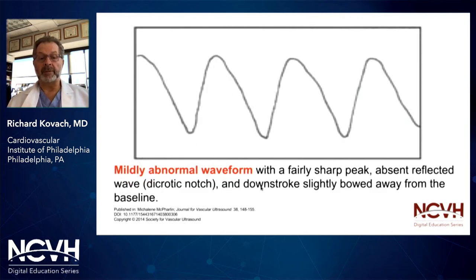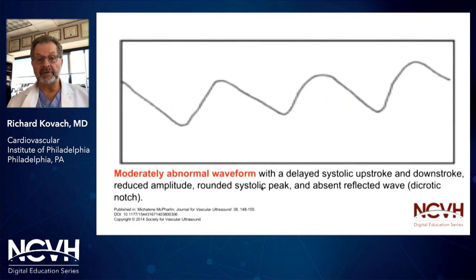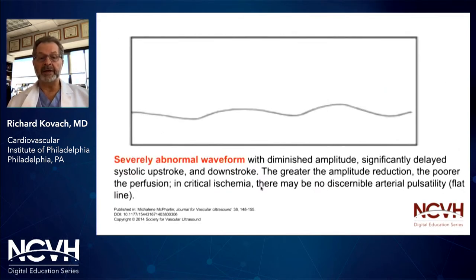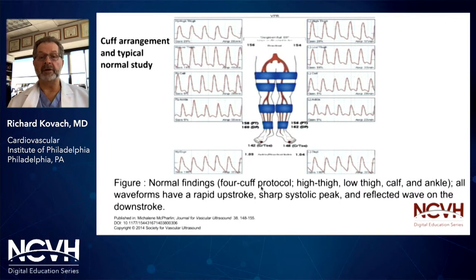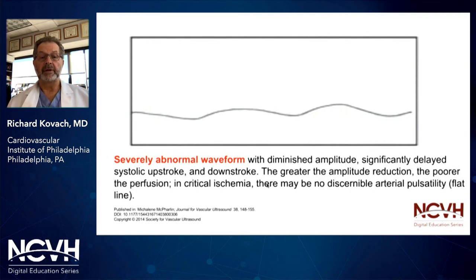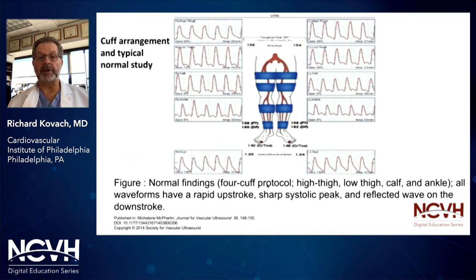With mild disease, the waveform becomes mildly abnormal — there's some broadening, mild rounding of the peak, and loss of the dicrotic notch. With moderately severe disease, there's further widening and rounding with a significant reduction in amplitude. With severe disease, there's further widening and a great reduction in amplitude — in fact it's not unusual to see a flatline-type tracing. Here's an example of a completely normal PVR recording, demonstrating all levels with a sharp upstroke, sharp peak, rapid downstroke, and dicrotic notch.